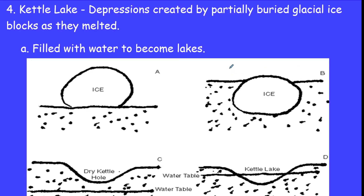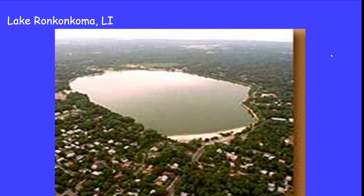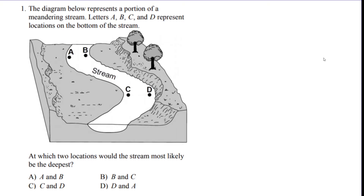Another feature of a glacier is kettle lakes — a giant block of ice that sinks into the ground, then melts and makes a little lake. The last thing about glaciers is that the Finger Lakes, which are in New York State around the Syracuse area, were carved by glaciers. Just a little fun fact.